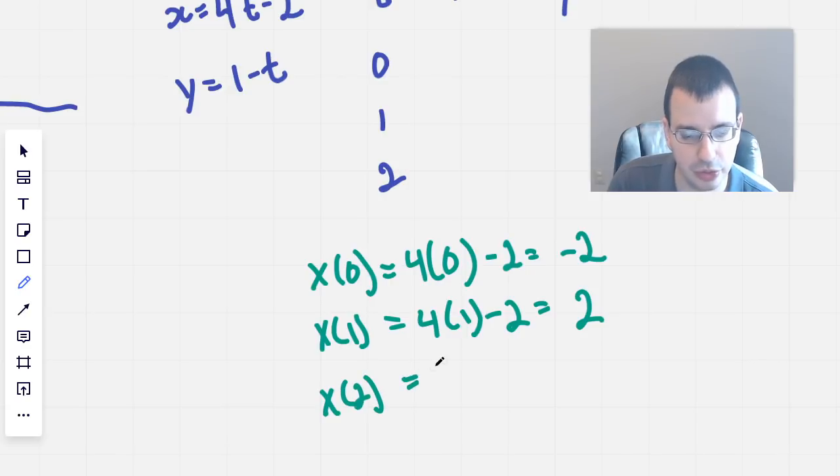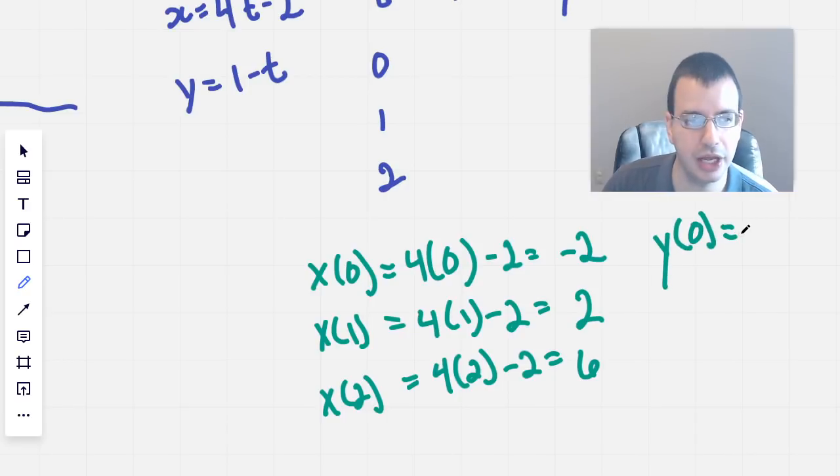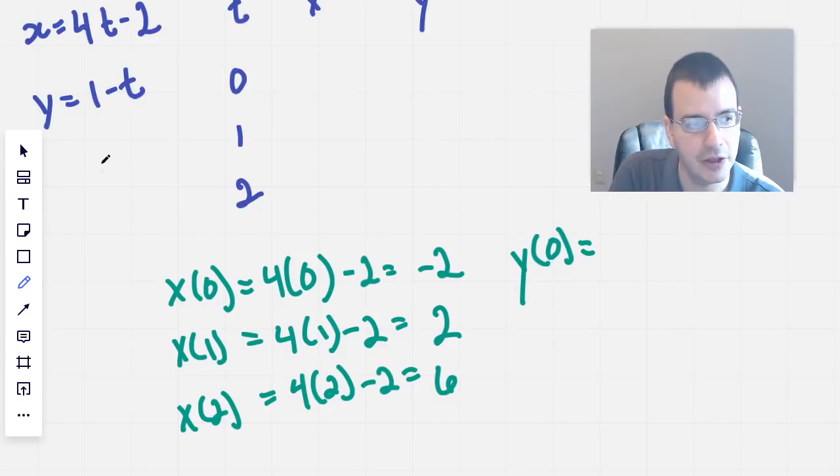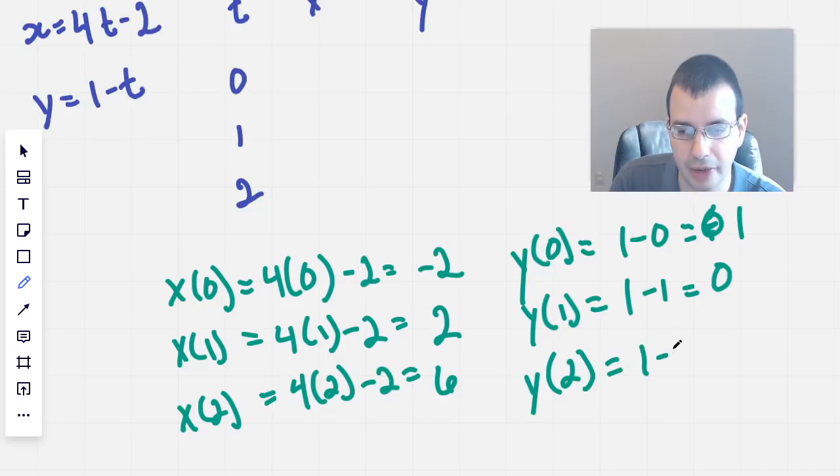x of 2 equals 4 times 2 minus 2, which is 8 minus 2, which is 6. And then we'll do y of 0, which is 1 minus 0, which would be 1. y of 1 would be 1 minus 1, which would be 0. y of 2 would be 1 minus 2, which would be negative 1.